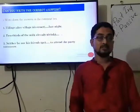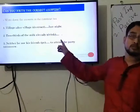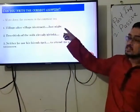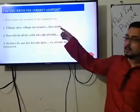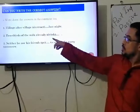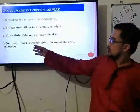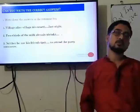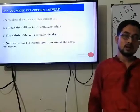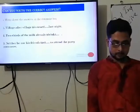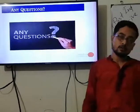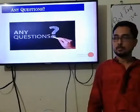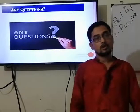Now I am going to give you three questions to answer in the comment box using the 3Q Method. First question: 'The village (rob) last night.' Second question: 'Two thirds of the milk (already drink).' Third question: 'He — neither he nor his friends (go) to attend the party tomorrow.' Post your answers in the comment box. I will go through every answer and try to rectify it, and I will also answer any questions you drop in the comment box.